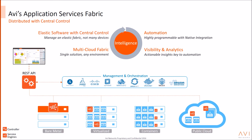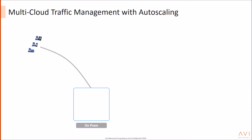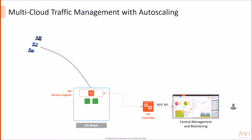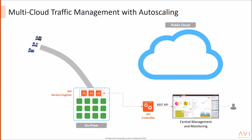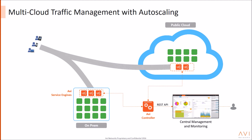In the demo today, you will see an on-premise data center running a simple green application. Avi's fabric provides load balancing for this application, and the controller provides insights into application performance and utilization. AWS is configured as a spillover cloud for this application to be used as needed. As the application sees an increase in load, Avi's controller spins up more instances of application and service engines till there is no more capacity on-prem. Then the Avi controller spins up additional application and service engines in AWS and sends spillover traffic to AWS. This is a classic cloud-bursting use case, where Avi measures application utilization in real-time and scales out to the most optimal site based on user SLAs or business rules.